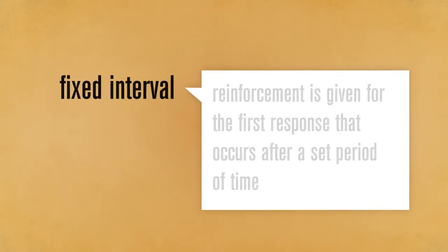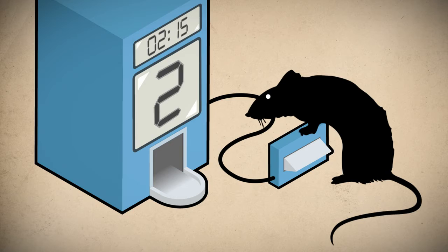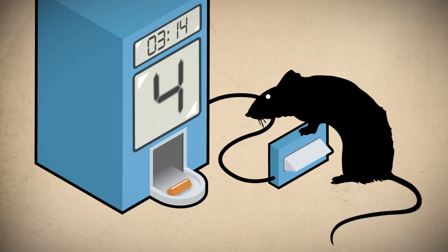Now let's take a look at the reinforcement schedules based on time. With a fixed interval schedule, reinforcement is given for the first response that occurs after a set period of time. If the fixed interval is three minutes, the first response to occur after three minutes will be reinforced. Any response before that time has elapsed will be ignored. Once the response has occurred, the time is reset and again only the first response to occur after the interval — in this case three minutes — will be reinforced.